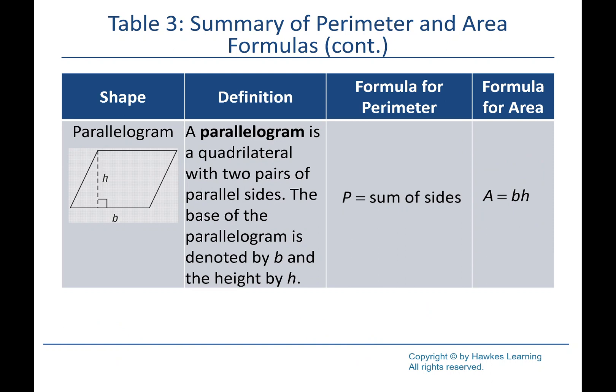A parallelogram has two sets of parallel sides. A rectangle is a special parallelogram with 90° angles; push on a rectangle and make it lean over and you get a general parallelogram. The area formula is base × height — very similar to a rectangle — where the height is a vertical line and the base is the bottom side. You can think of cutting the left triangular piece and sliding it to the right to form a rectangle.